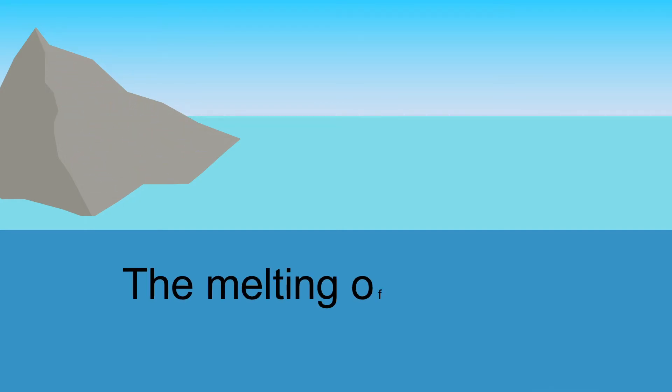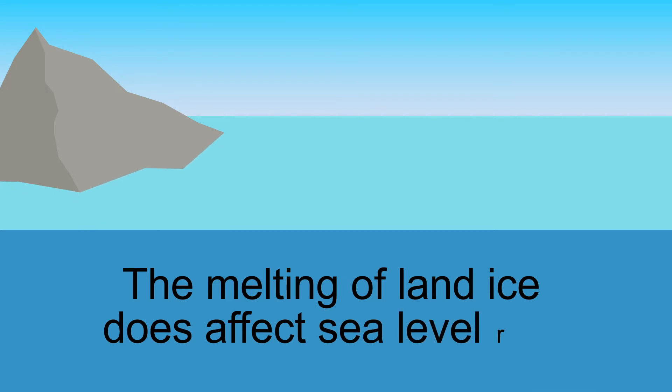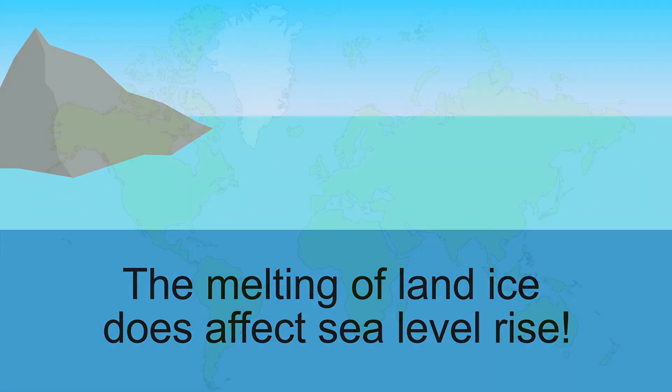The melting of land ice does affect sea level rise. When land ice melts, the water eventually enters the sea and the total amount of water increases, causing sea levels to rise.